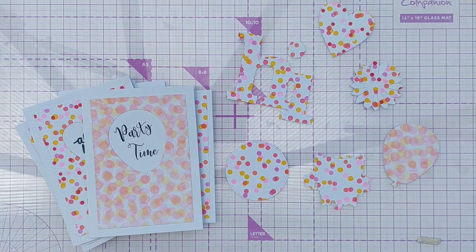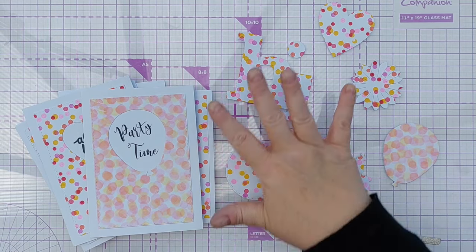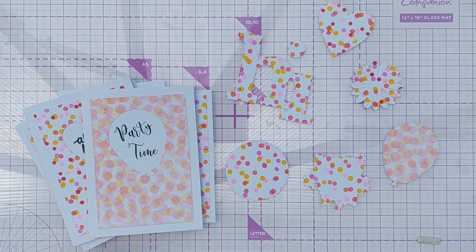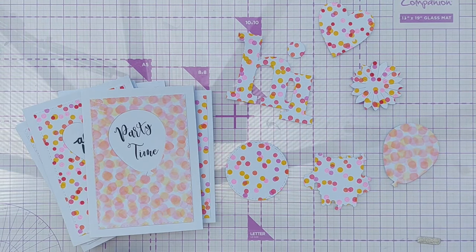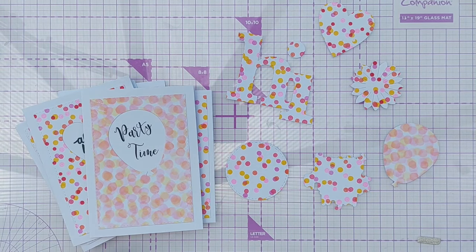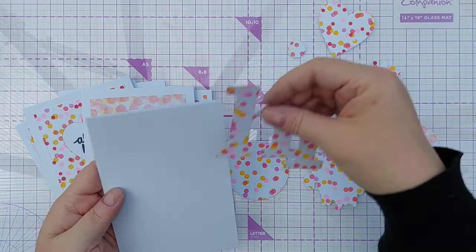Because we've die cut shapes out of our spotty panels, we've got these spotty die cuts left over. So you can always use these on cards all by themselves or with other elements.